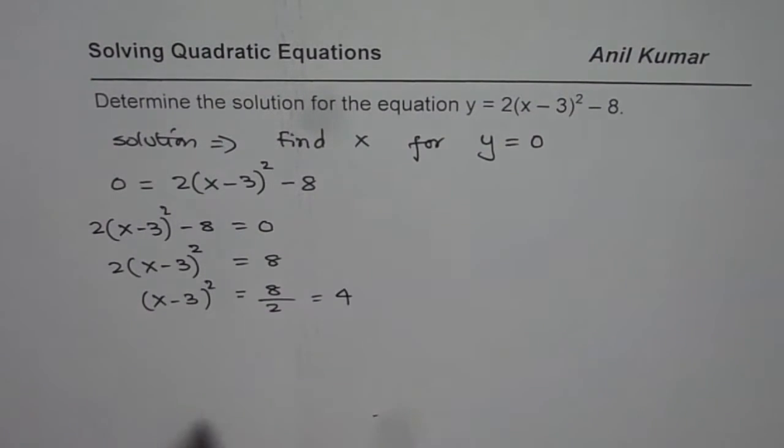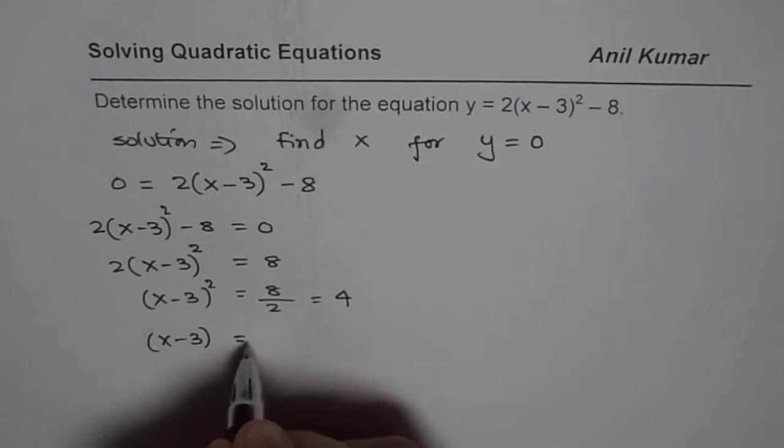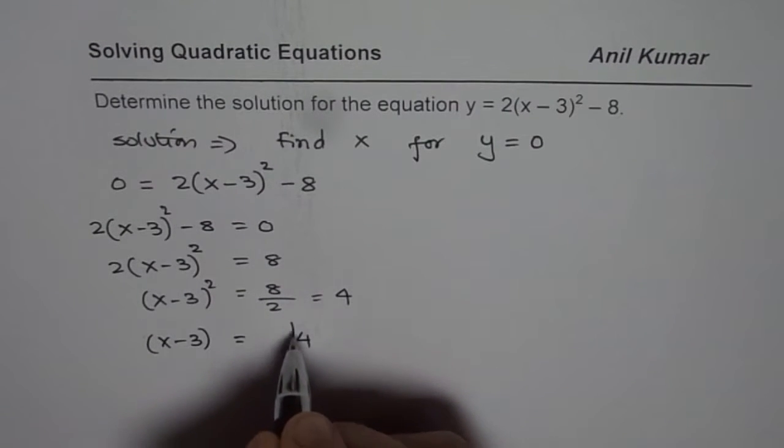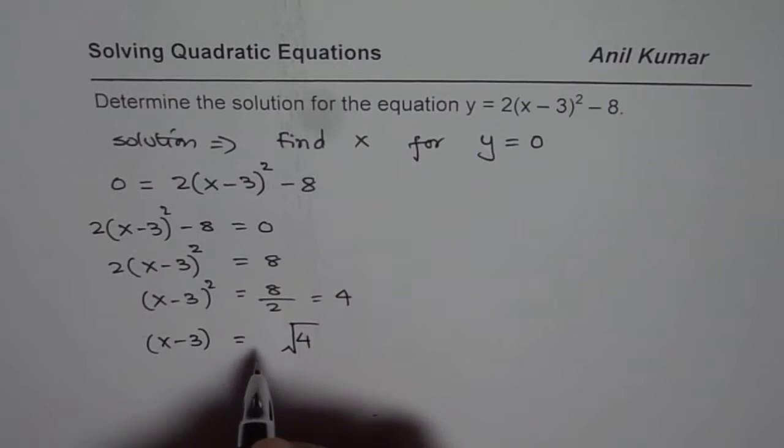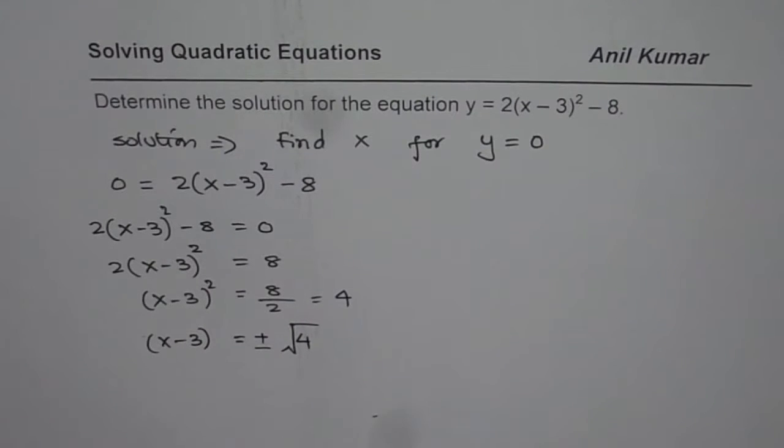Now we will do square root. x minus 3 equals square root of 4. Remember, whenever you do square root, you have to write plus and minus. Both the signs.